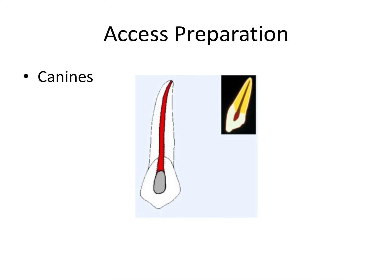Upper and lower canines almost always have one canal as well, and an ovoid or oval access is often the shape of choice.